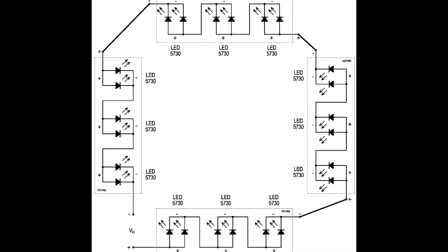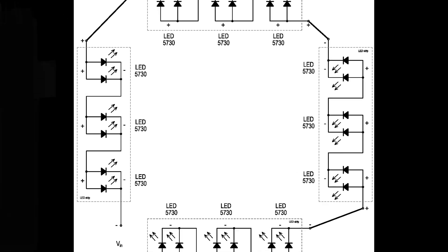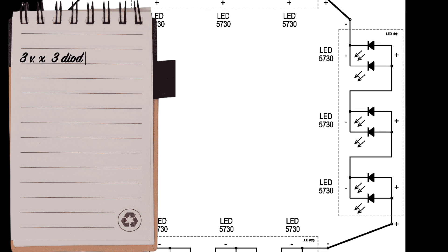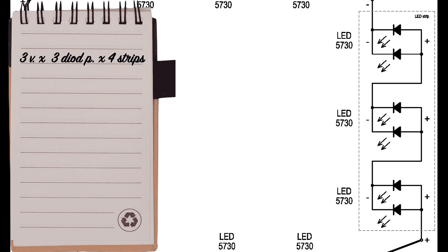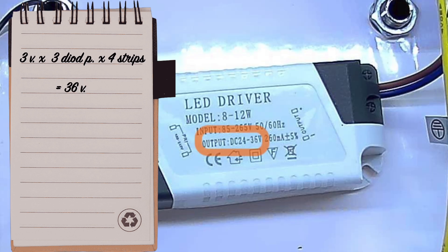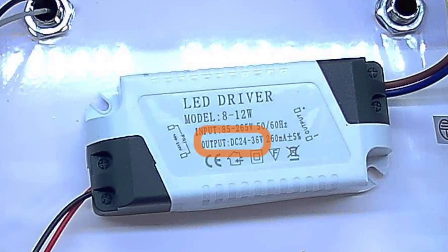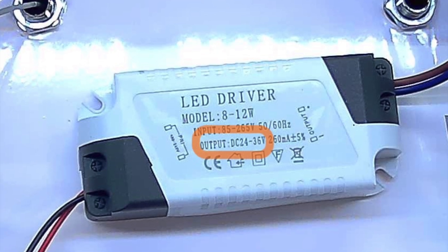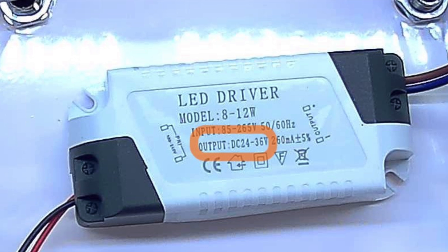We multiply three volts on the LED by three series-connected pairs on the light strip and multiply by four consecutive strips. We get the voltage of all strips: 36 volts. We look at the driver cover. It says DC 24 to 36 volts. Correct! Everything is exactly right! This is how our Octacom multimeter revealed the connection diagram of the LEDs in the lamp.